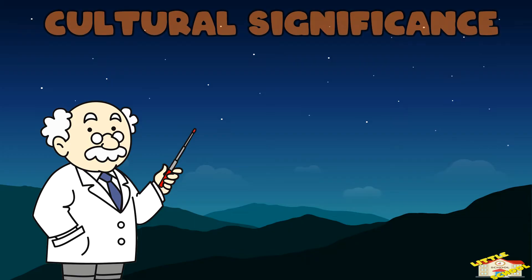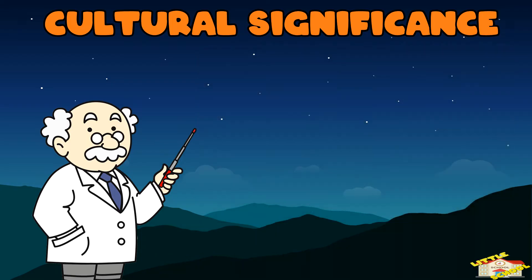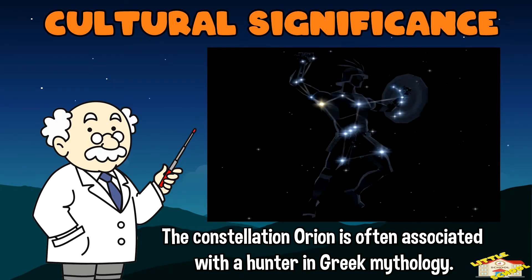Cultural significance: different cultures throughout history have identified their own constellations, each with its own stories and significance. For example, the constellation Orion is often associated with a hunter in Greek mythology.